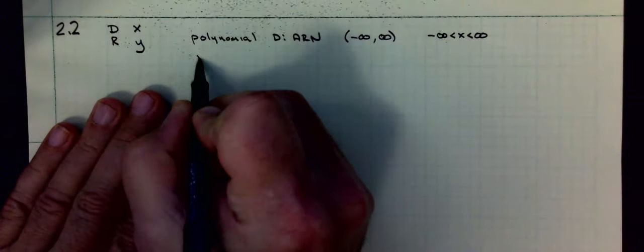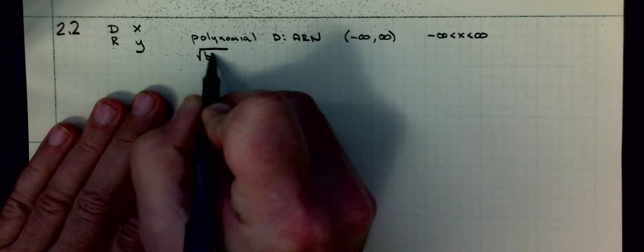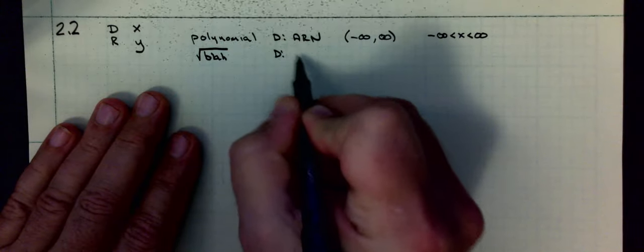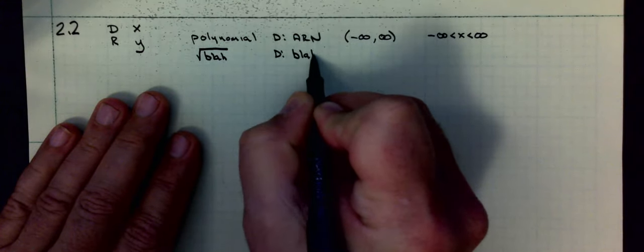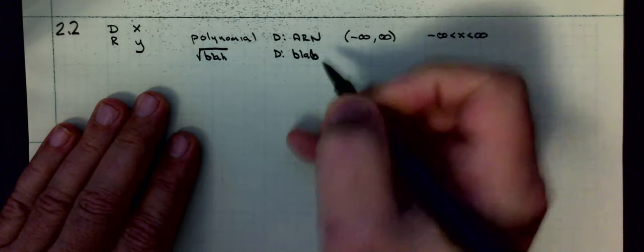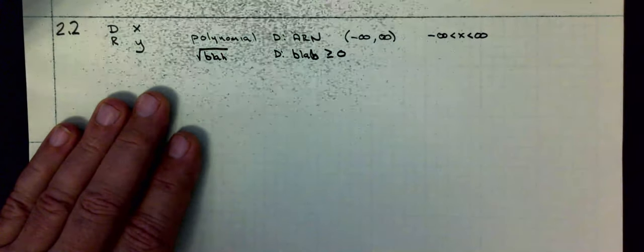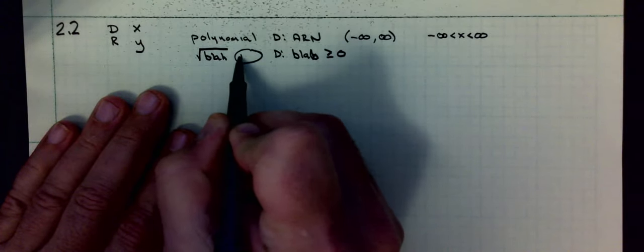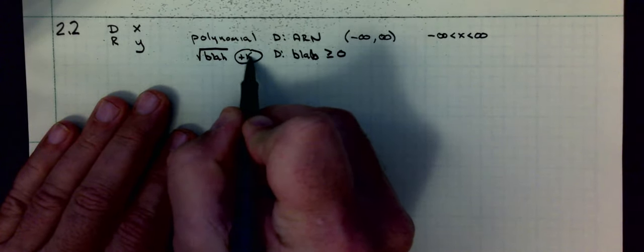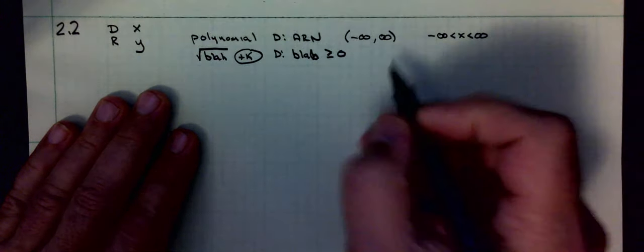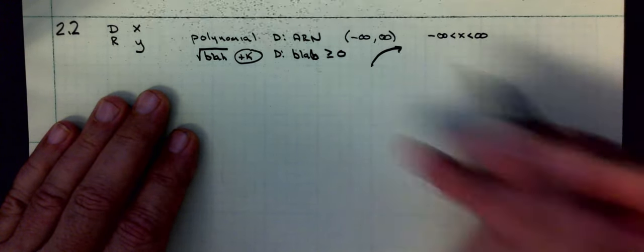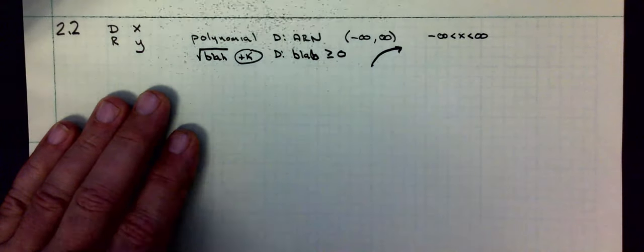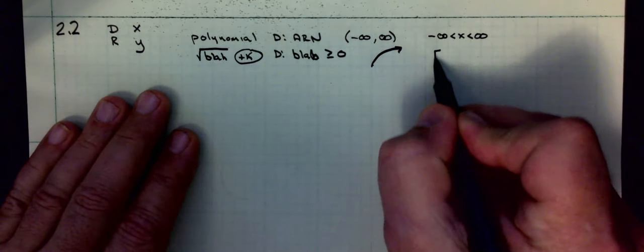For our square roots, we have something underneath the square root symbol. Its domain is going to be whatever is underneath that square root symbol has to be greater than or equal to zero. The range would be something that I would be adding k there. Normally our square root function starts at zero and goes up to infinity. But if I have it moving up, range would start at whatever number k would be.